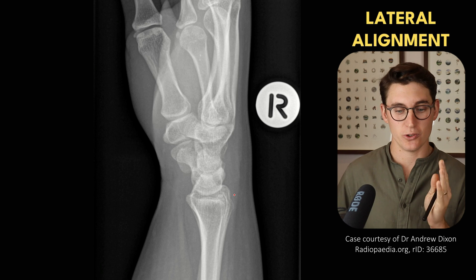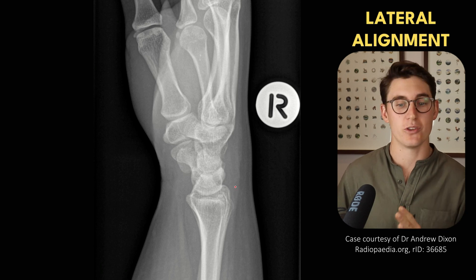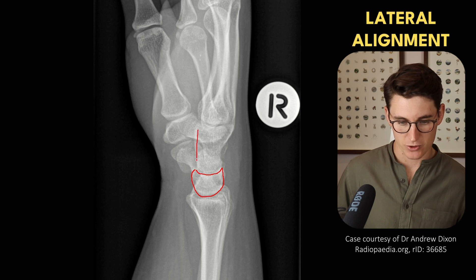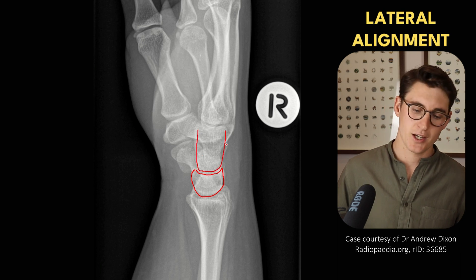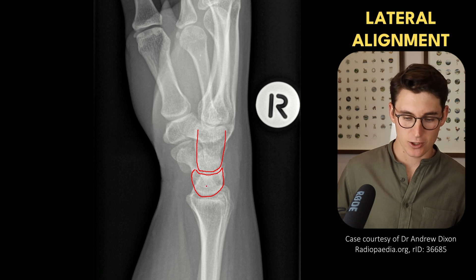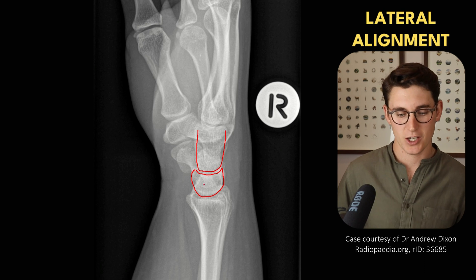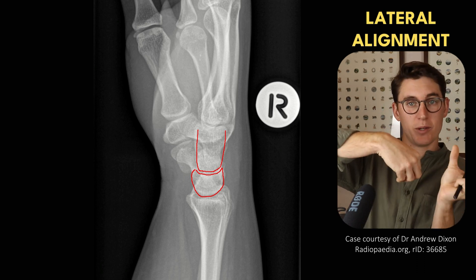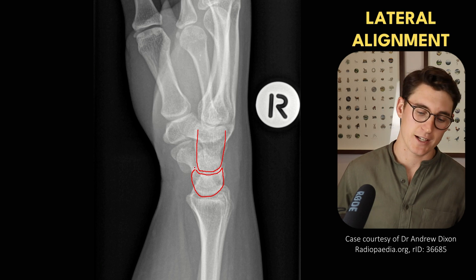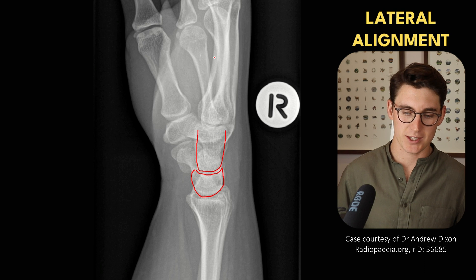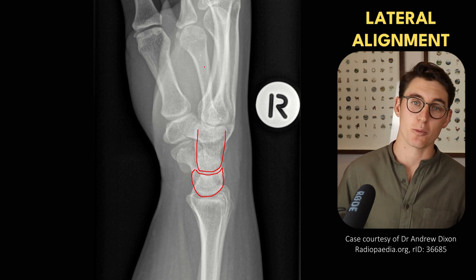Next, we're going to look at the lateral view to assess alignment of the wrist. We can outline our lunate bone and see that our capitate sits nicely within our lunate. We want the capitate, the lunate, our metacarpals, and our radius to be nicely stacked on top of one another. We can have this ball-in-cup arrangement disrupted when we have dislocation of the lunate. It's really important to see that capitate sitting within the lunate, with this line generally well aligned and well stacked.